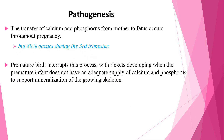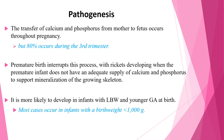Premature birth interrupts this process, with rickets developing when the premature infant does not have an adequate supply of calcium and phosphorus to support mineralization of the growing skeleton. Most cases of rickets of prematurity occur in infants with birth weight less than 1000 grams, but it is more likely to develop in infants with lower weight and younger gestational age.